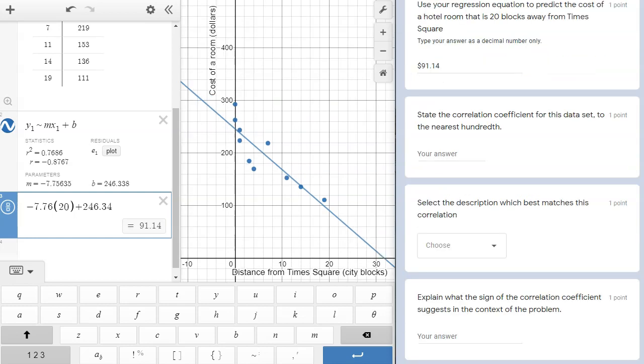In the next part, we're asked to state the correlation coefficient to the nearest hundredth. We've already done this calculation, so we'll just look at line 2 in Desmos where we did our linear regression analysis. We find the correlation coefficient under statistics, and we are looking specifically at r, not r squared. r is negative .876, so that rounds to negative .88 if we're rounding to the nearest hundredth.